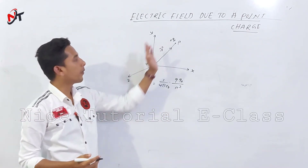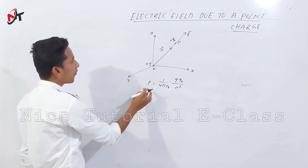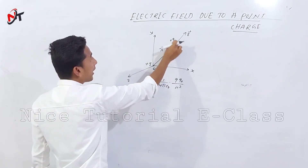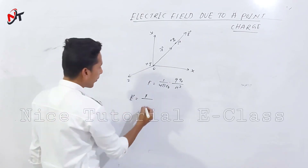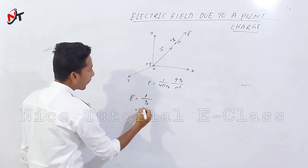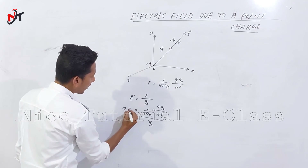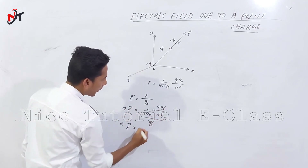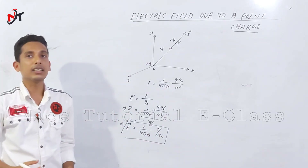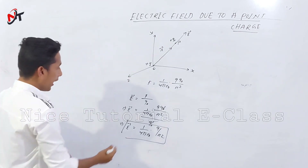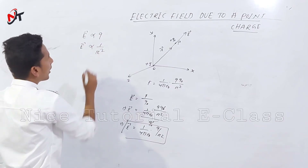The electric field is in the radially outward direction for a positive source charge. The electric field intensity E equals F upon Q₀. Substituting F: E = 1/(4πε₀) · qQ₀/R² divided by Q₀. Q₀ cancels, giving E = 1/(4πε₀) · q/R². This is the electric field intensity due to a point charge. Electric field intensity is directly proportional to charge and inversely proportional to the square of the distance.